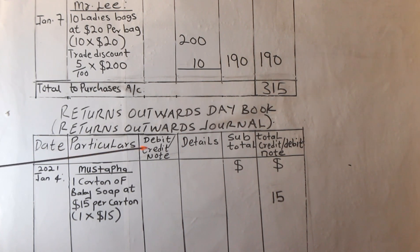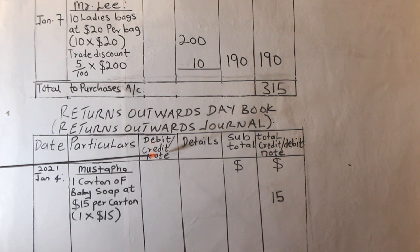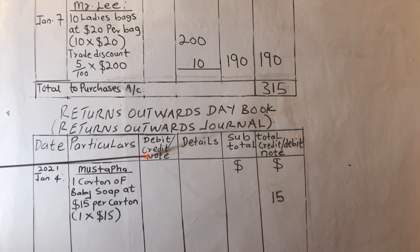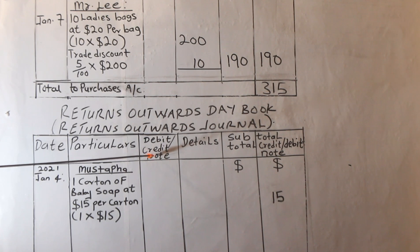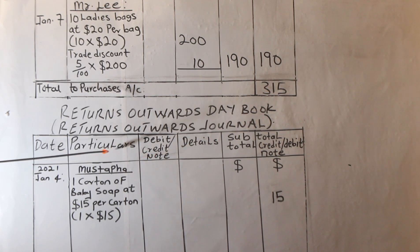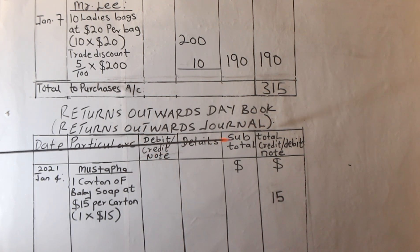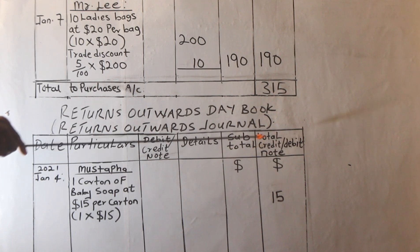The only difference is in the debit and credit note column. Under the Purchases Journal, we just have the invoice number at that point. So we have: date, particulars, invoice or debit/credit note number, details, sub-total, and total.